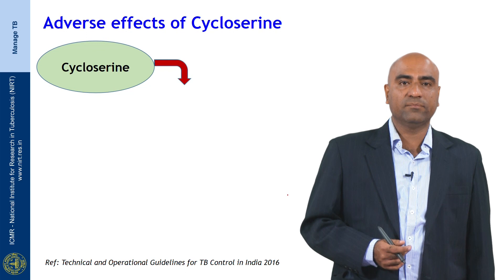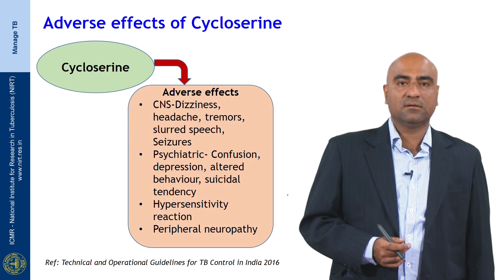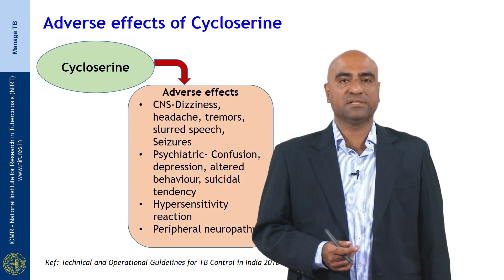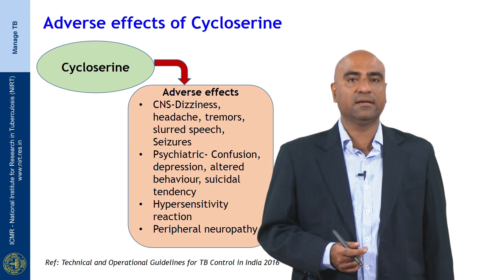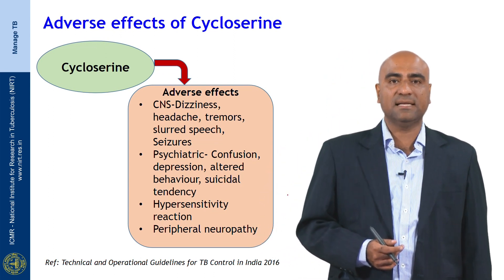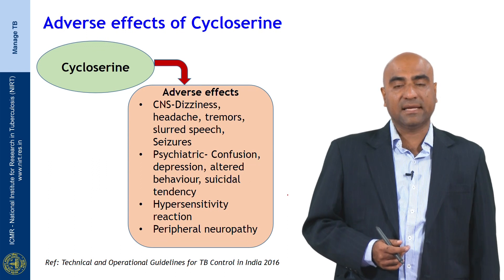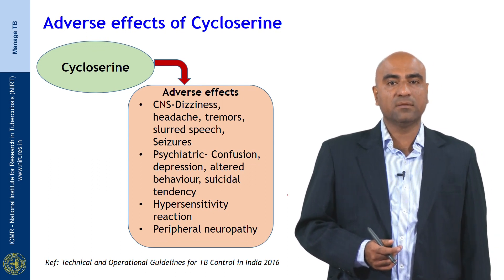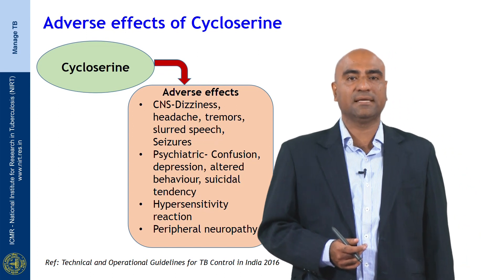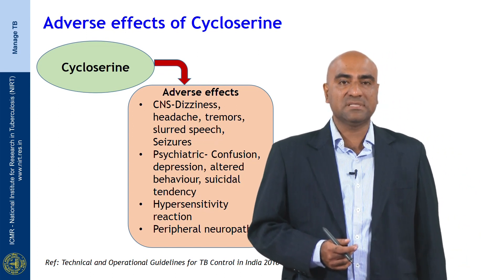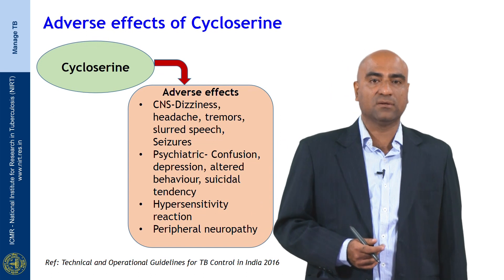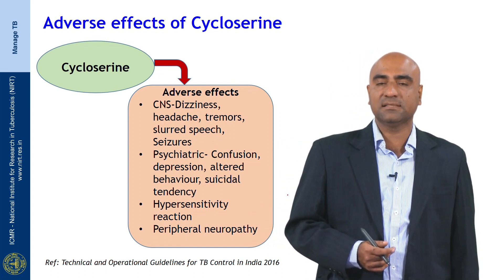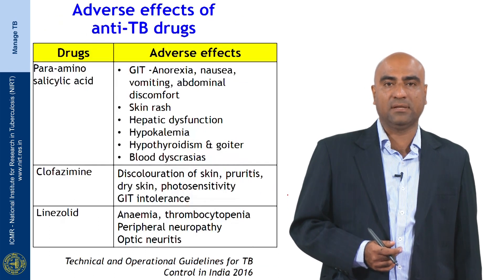Coming to cycloserine: the main adverse effects are CNS manifestations like dizziness, headache, tremors, slurred speech, and seizures. Psychiatric manifestations include confusion, depression, altered behavior, and suicidal tendency. Hypersensitivity reactions are also known to occur, and peripheral neuropathy can happen especially when cycloserine is combined with other drugs.